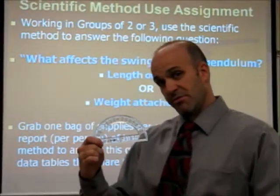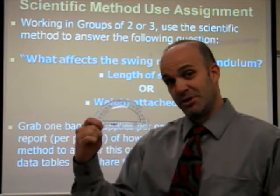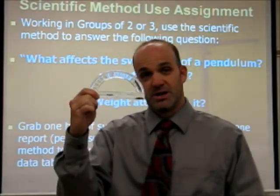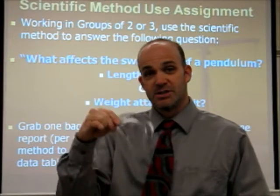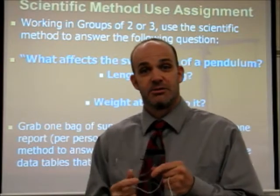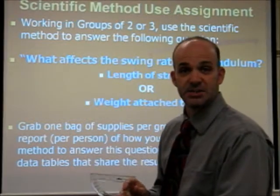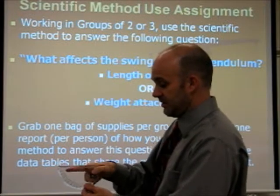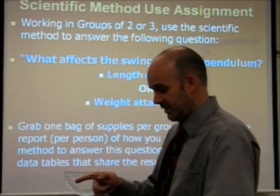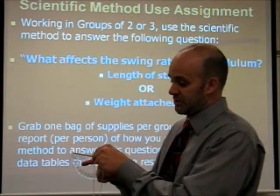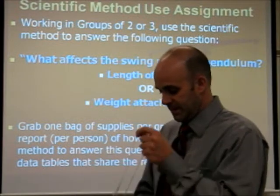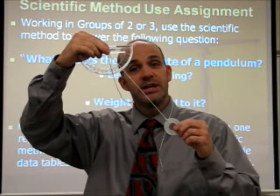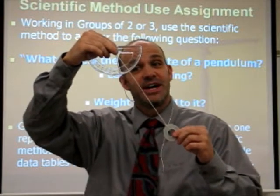Also included in your bag is your friendly neighborhood protractor. Using this protractor, you can make sure every swing starts at the same angle. Simply attach your protractor to your desk via tape, put the string through the hole, and every swing you make can be at the same exact angle.